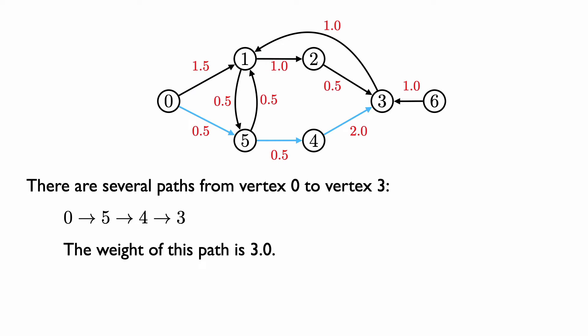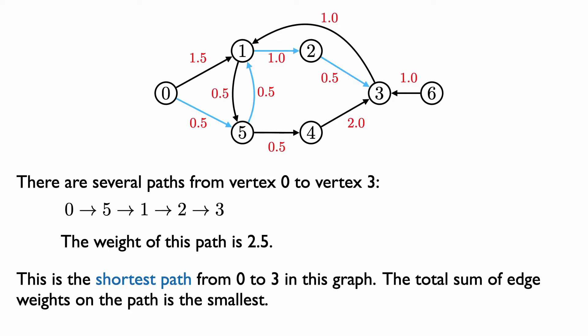Here's another way we can go from vertex 0 to vertex 3. We can first go to vertex 5, then go to vertex 4, then go to vertex 3. The length of this path is 0.5 plus 0.5 plus 2, so the length of this path is also 3. We can also go from vertex 0 to vertex 5, up to vertex 1, then to vertex 2, and then to vertex 3. The weight of this path is 2.5.